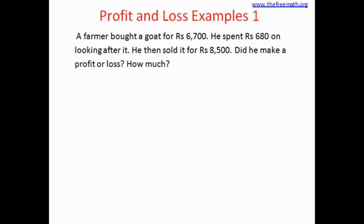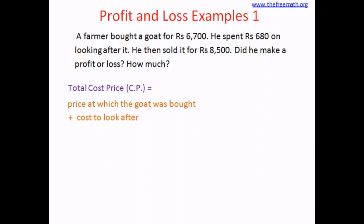In this example, the cost price is really not just one number. The cost price means the total cost price — the total money that the farmer spent. The farmer spent two types of money: the first is to buy the goat, and the second is to take care of it, to look after it. So the total CP equals the price at which the goat was bought plus the cost to look after it. So let's add these two numbers: 6,700 plus 680 equals 7,380.